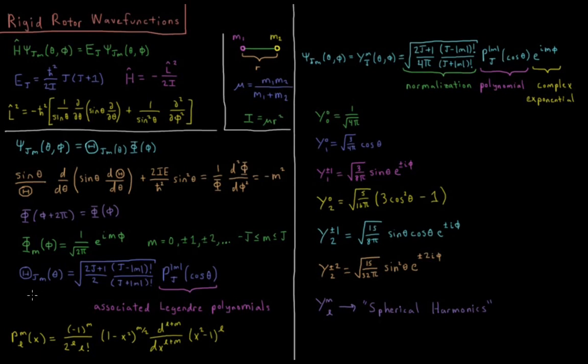So we'll skip to the result. The result is that theta jm of theta equals a normalization constant times a polynomial of cosine theta. So this normalization constant 2j plus 1 over 2 times j minus absolute value of m factorial over j plus absolute value of m factorial. So everything in there is straightforward enough and then square root of everything.